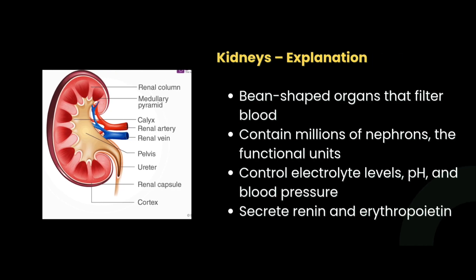Now we can explain each part. The kidney is a bean-shaped organ that filters the blood. It contains millions of nephrons, which are the functional units. It controls electrolyte levels, pH, and blood pressure, and secretes renin and erythropoietin.